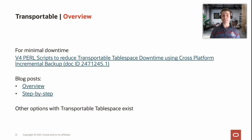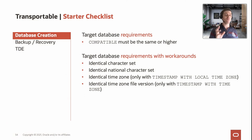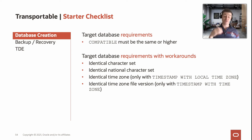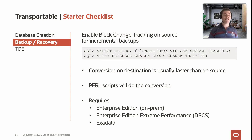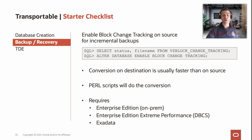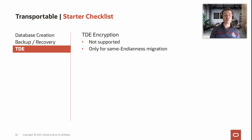There's a MOS note describing this method with step-by-step blog posts. Some constraints: the compatible parameter on your target system must be the same or higher version, and we recommend identical character sets and time zones — though with some workarounds those can differ. We also recommend enabling block change tracking, which makes your level-one backups much faster since only changed blocks are included. Finally, if you have tablespace encryption, you can't go cross-endian with this method; however, if you have the same endian — like moving from Windows to Linux — then tablespace encryption is supported.